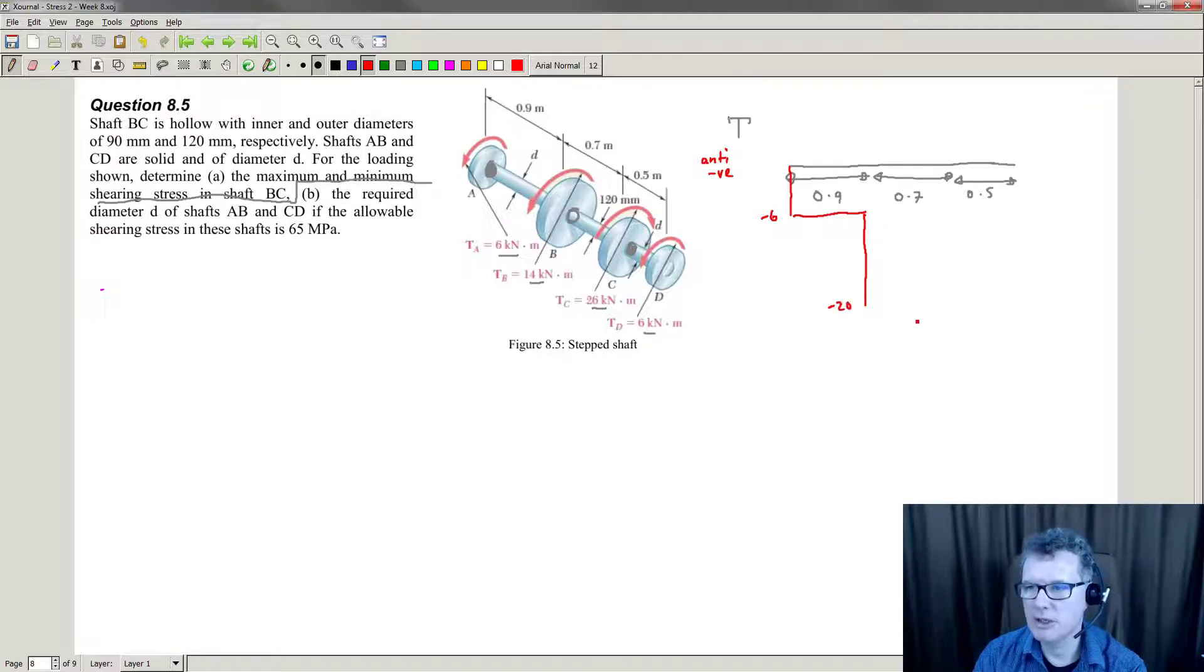And then this one here is adding on 26 kNm. So we shoot up to 6. And then finally, I drop back down to 0.